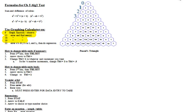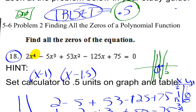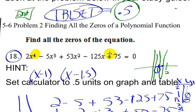Back to problems 18 and 19 — we're still just going to enter the equation and find the zeros. Here's number 18: find all the zeros of the equation. We know we're going to have four zeros because the leading term is degree four.